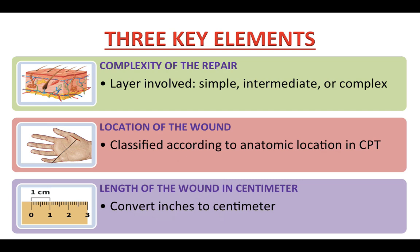This slide is about the three key elements. In order to accurately assign a code for this type of procedure, you need three key elements. First, the complexity of the repair or the layers involved — either simple, intermediate, or complex. Second, the location of the wound, classified according to the anatomical location in the CPT code description. Third, the length of the wound being repaired, measured in centimeters.